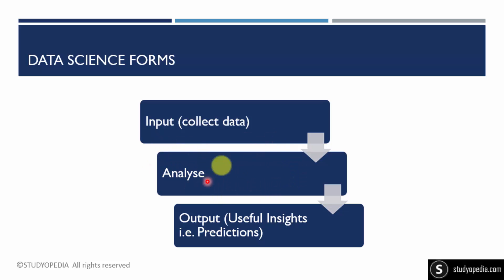The work of data science is to analyze and clean data to generate useful insights based on predictions. An example would be suggested videos on YouTube based on what you watch, suggested Instagram Reels, or YouTube Shorts based on your preferences — these are all based on data science concepts.